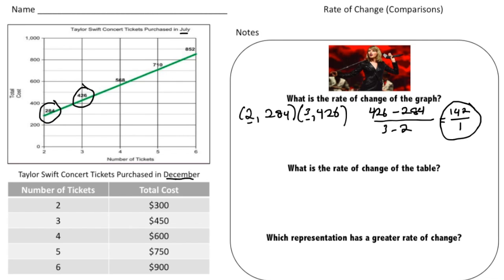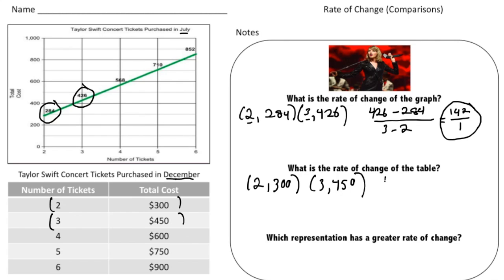Now let's find the rate of change of the table. We do the exact same thing. Our points are: two tickets cost $300 and three tickets cost $450. So the change in Y is going from 300 to 450, which is 150. So 450 take away 300 equals 150.